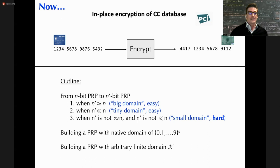Those domains might be credit card numbers, street addresses, or valid graph colorings — really almost anything. This is the outline for the first lecture. There's a lot of material and we'll see how far we get before the break.